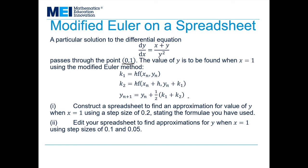And here is the statement of the modified Euler method that we're using. The first part is to construct a spreadsheet to find an approximation for the value of y when x equals 1 using a step size of 0.2. And then to edit our spreadsheet to find approximations using step sizes of 0.1 and 0.05.